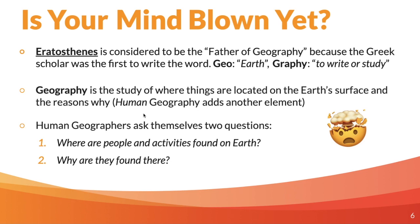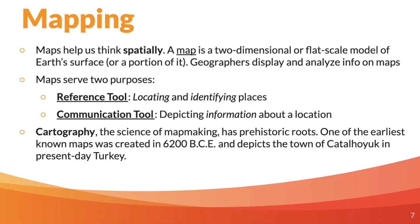We go a step further and ask ourselves two questions. One: where are people and activities found on Earth? Because they are concentrated in particular areas with different activities located in those specific areas. The second question is: why are they there? How does the world shape human activity? Mapping is crucial to this — it helps us think spatially, left to right, up and down, with parallels and meridians, the equator versus the prime meridian. All of those things help geographers both display and analyze information.